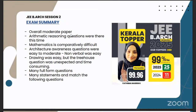This time we had arithmetic reasoning questions, which was new for this year because we had no quantitative or arithmetic reasoning questions for Session 1. Students were expecting no questions from that particular part for the second exam as well. But this time we had arithmetic reasoning, direction sense, blood relation, and a few basic mathematics questions from quantitative reasoning. As always, mathematics is the most difficult part of the JBR exam, and this time also mathematics is comparatively difficult. Architecture awareness compared to Session 1 was easy to moderate — most of our students answered 45 to 50 questions out of 50.